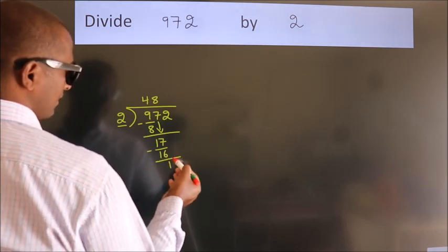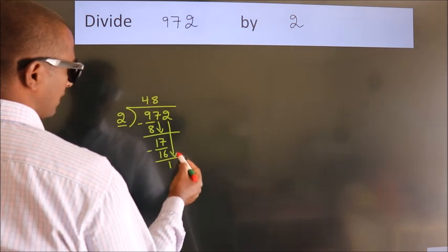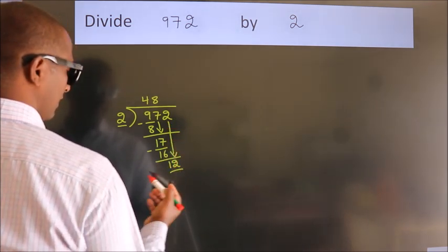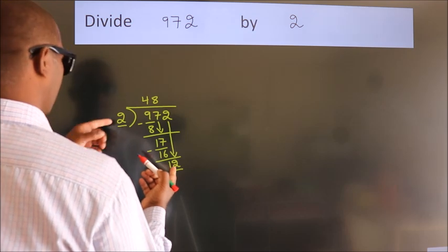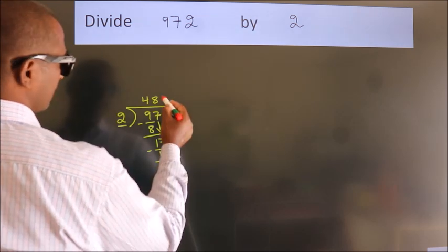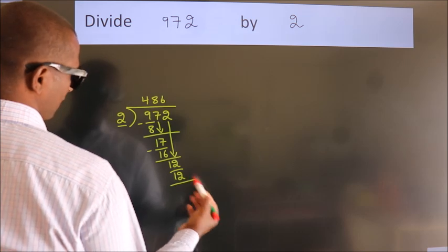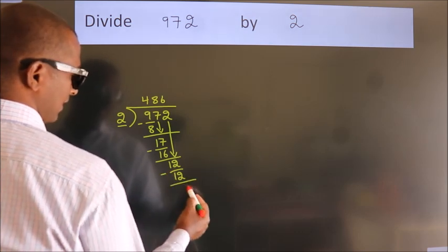After this, bring down the beside number. So 2 down, so 12. When do we get 12? In 2 table, 2 times 6 equals 12. Now we subtract. We get 0.